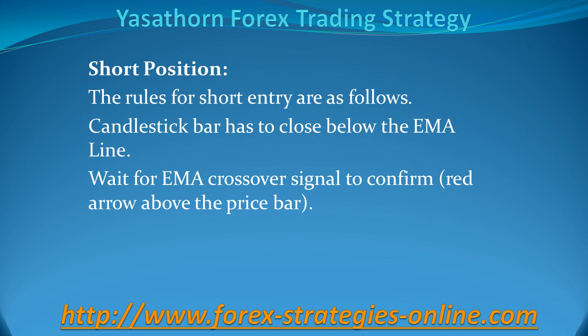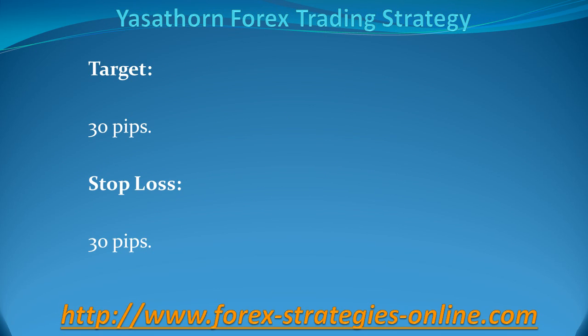Strategy for short position. The rules for short entry are as follows: the candlestick bar has to close below the EMA line, then wait for the EMA Crossover Signal to confirm — that is, a red arrow should appear above the price bar. Target: 30 pips. Stop loss: 30 pips.